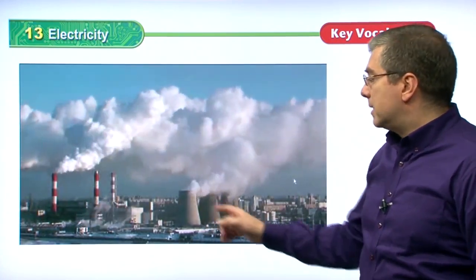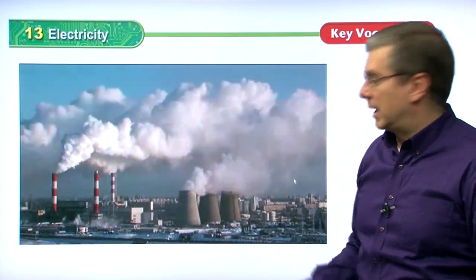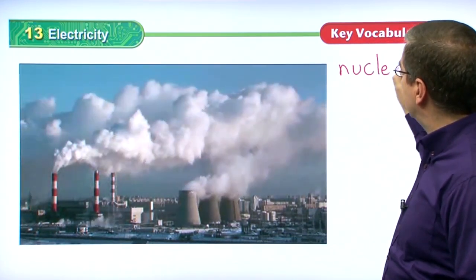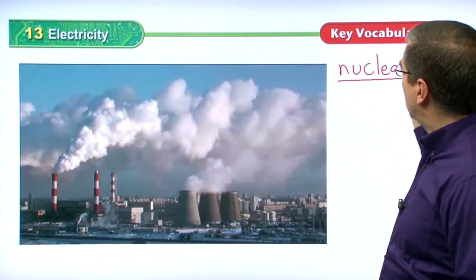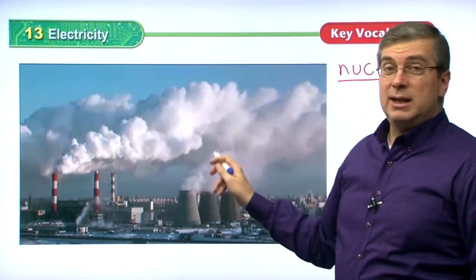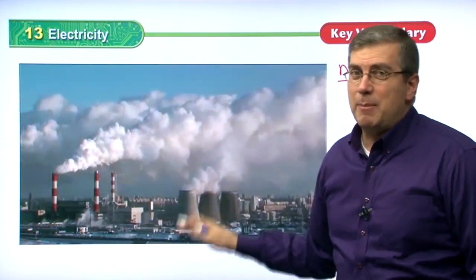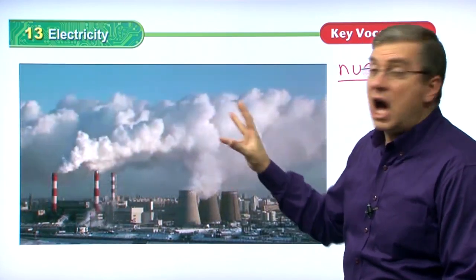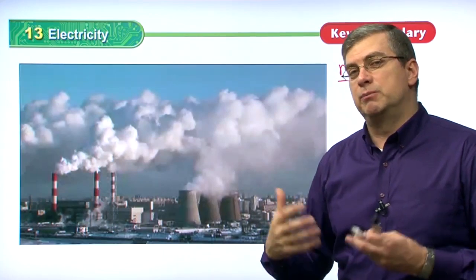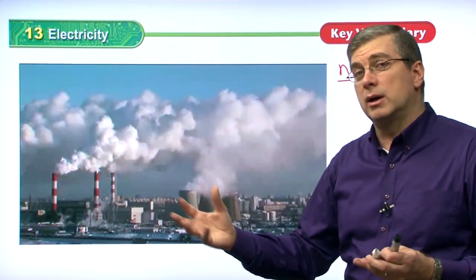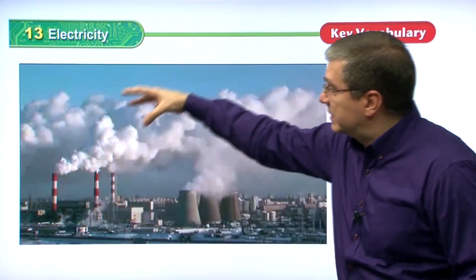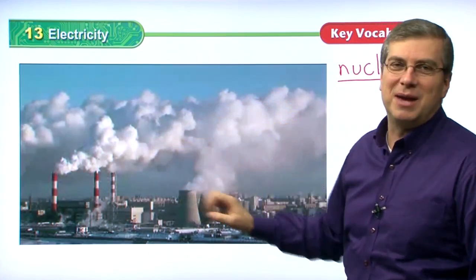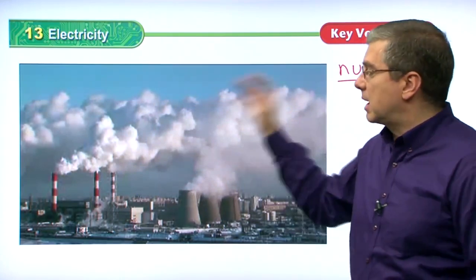Here is a power plant — this is actually a nuclear power plant. We can tell because of these structures here. It's making a lot of smoke, but don't worry. Most of the smoke at an electricity power plant is actually steam. All of this smoke coming out is very hot water. Steam or hot water is used to produce electricity. That water is so hot it creates steam — it's not really a lot of pollution. Most of this is water vapor coming out of the power plant.